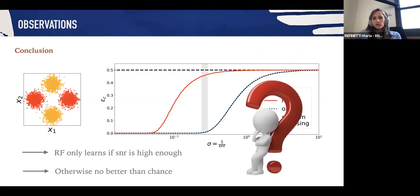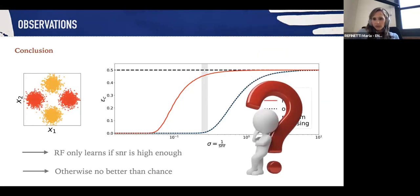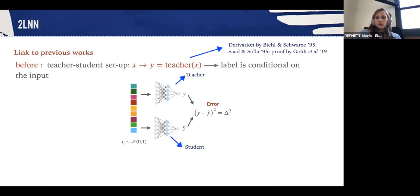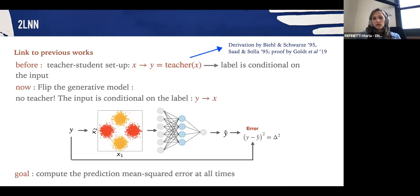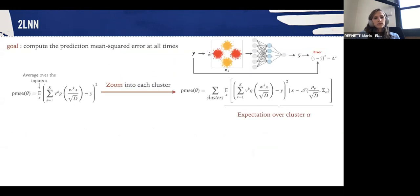Can we understand this from a theoretical standpoint? Let us start with the two-layer neural networks. The setting we're going to analyze has a long history but it was typically analyzed in a teacher-student scenario where the label is conditional on the input. Now we're going to flip this generative model and not have a teacher anymore. We're going to have an input which is conditional on the label, and our aim is to compute the prediction mean squared error at all training times.